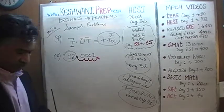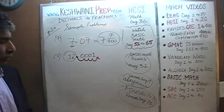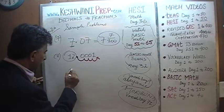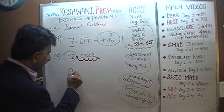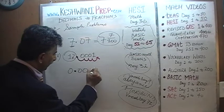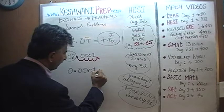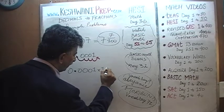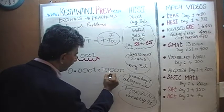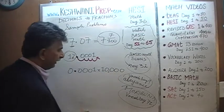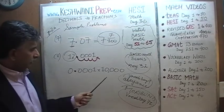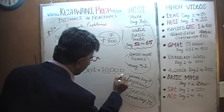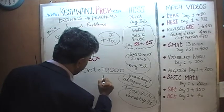We need to move the decimal four spots, which means we need to take 0.0001 and multiply it by one with four zeros — 10,000. If you can multiply the top by 10,000, we must multiply the bottom by 10,000.